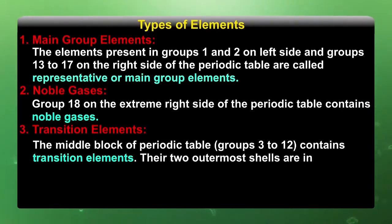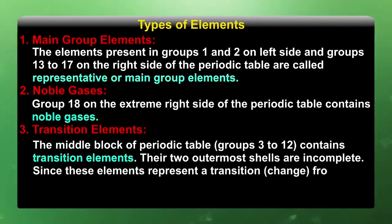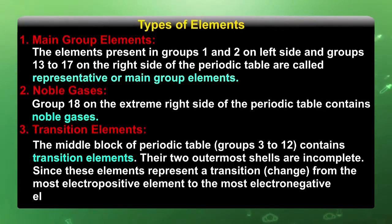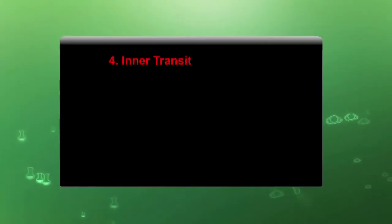In transition elements, the two outermost shells are incomplete. Since these elements represent a transition — a change from the most electropositive elements to the most electronegative elements — they are termed transition elements.